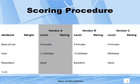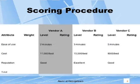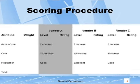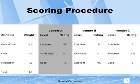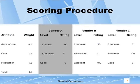The scoring is done by first assigning each vendor to one of the levels of the attributes. Here we see that vendors A, B, and C are being evaluated based on three attributes: ease of use, cost, and reputation. Vendor A is judged to take an average of two minutes to enter the standardized cases. Vendor B, on the other hand, enters the same set of cases in three minutes, and so forth. The next step is to put in the corresponding rating for the level of each attribute and the weight assigned to each attribute.